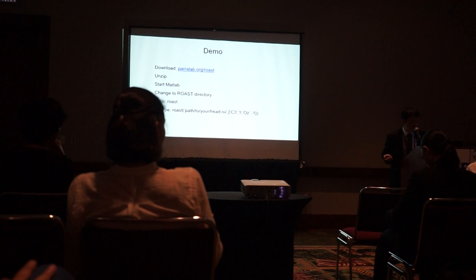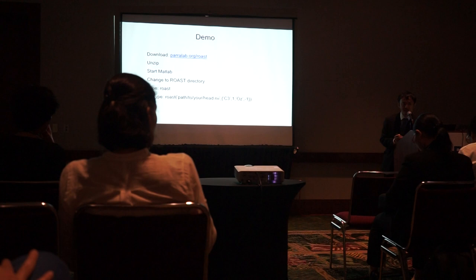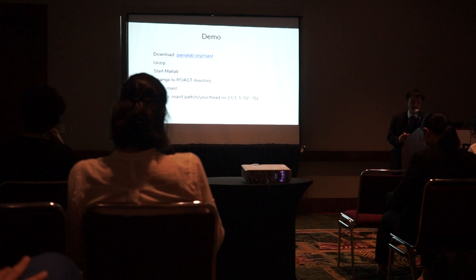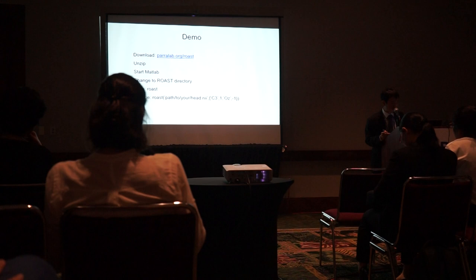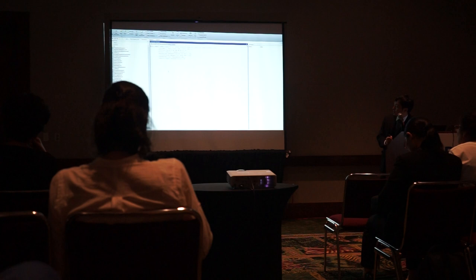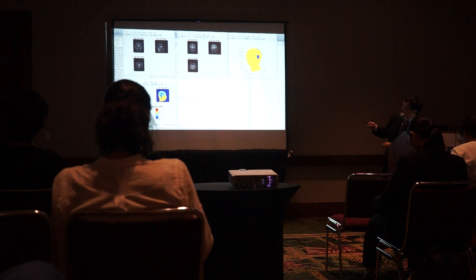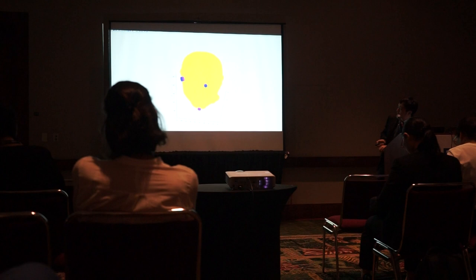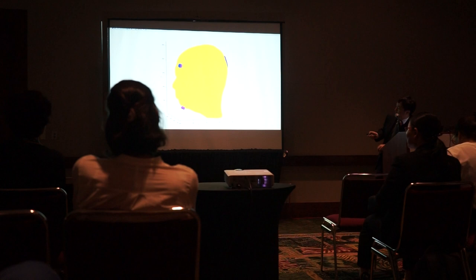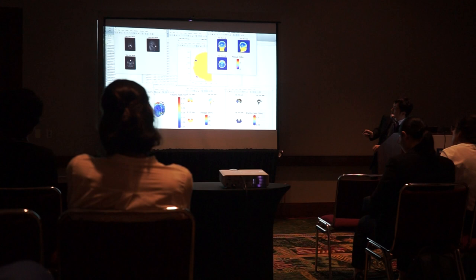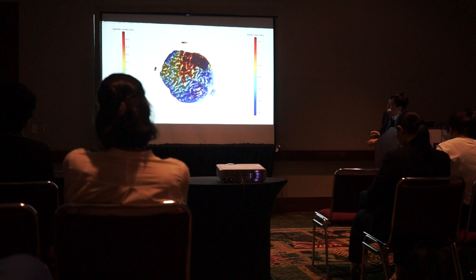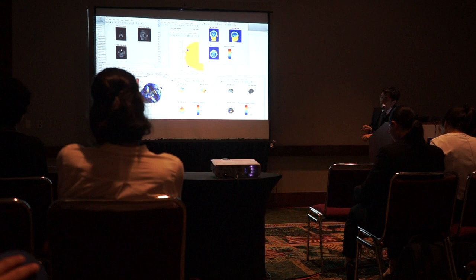If you take a look at the options file, you can configure the size of the electrode and many different settings. In the demo video, first you see a slice view of the MRI, and after electrode placement you get a rendering of the electrodes in place on the head. Then after processing, you get a slice view of the segmentation. After solving, you get the electric field distribution as a surface rendering of the brain and also a slice view of the field. All these outputs are saved to disk in NIfTI format, text file, and MATLAB format.